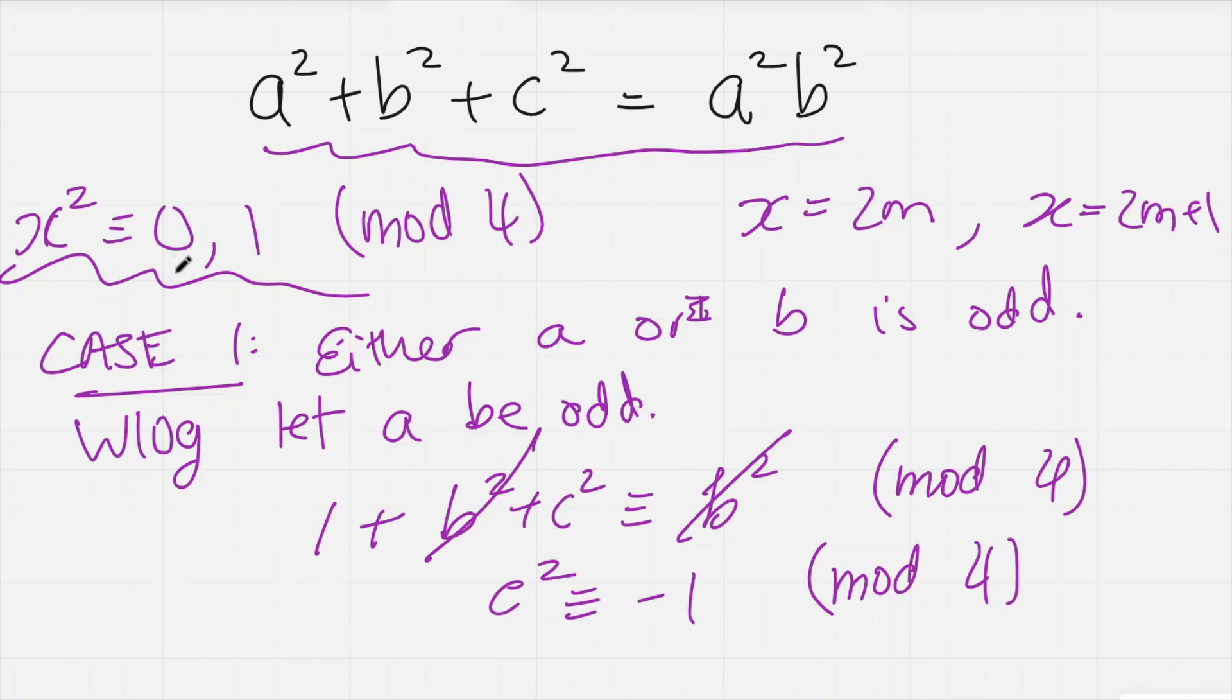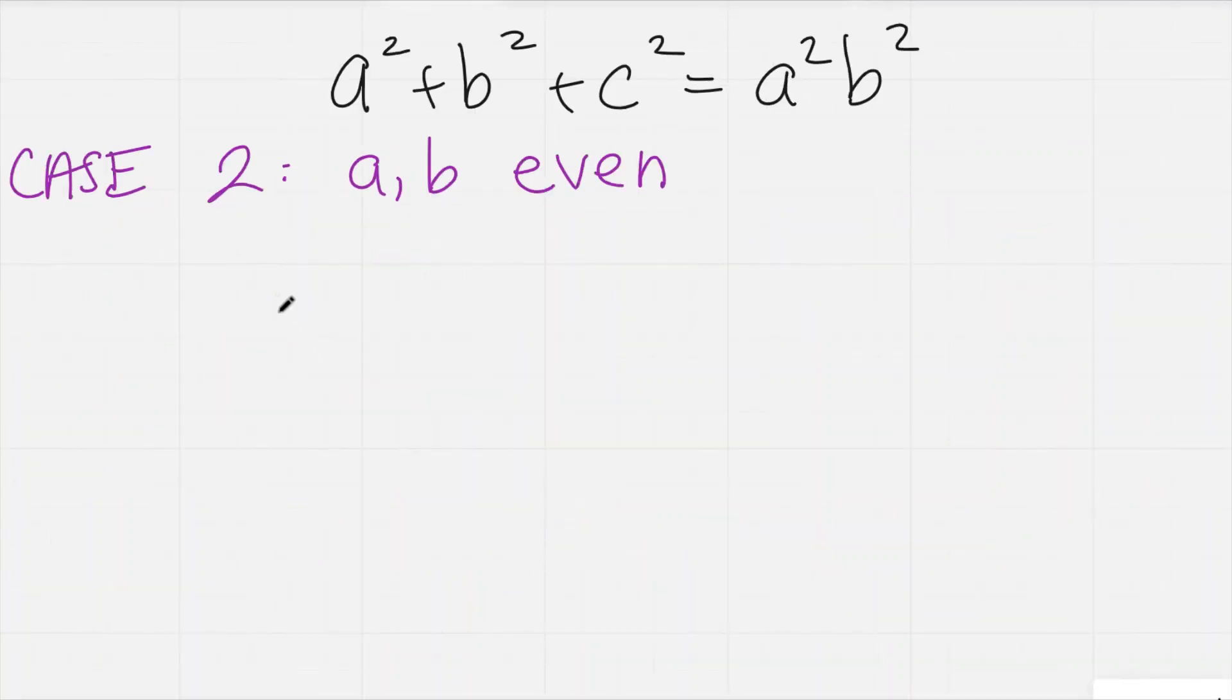Now the argument for case 2 is very, very interesting. So case 2 is going to be the case when both a and b are even. So let's move on to that.